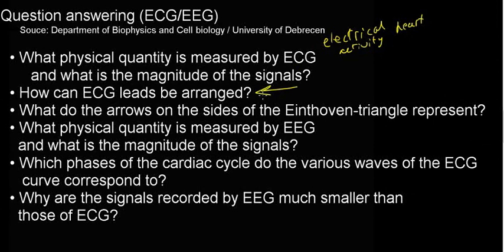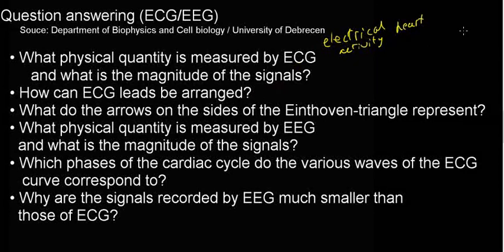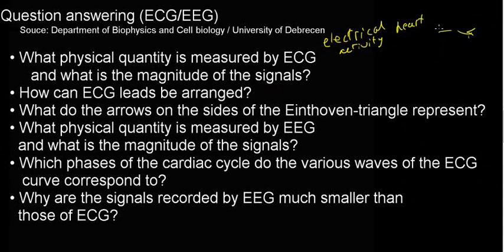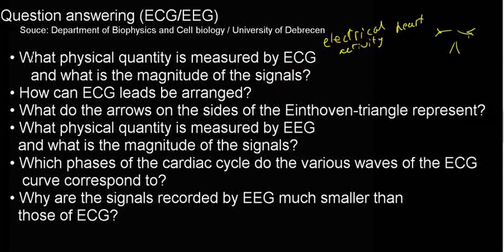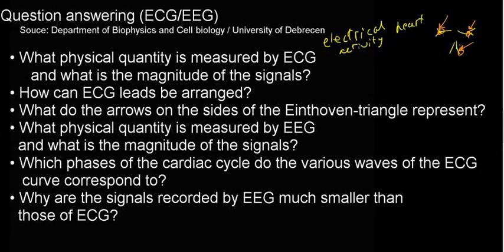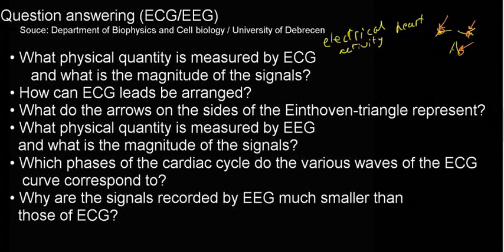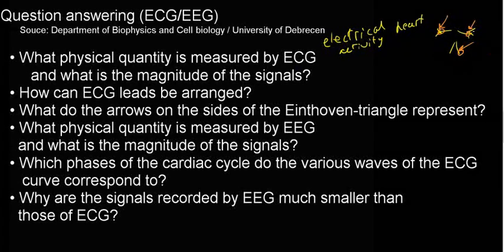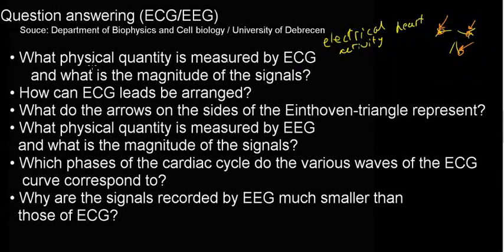Question two: how can ECG leads be arranged? The standard minimal arrangement is one electrode on the left hand, one on the right hand, and one on the left leg. In everyday electrocardiography you might see up to 12 electrodes or more, but this three-electrode configuration is the basic standard arrangement.